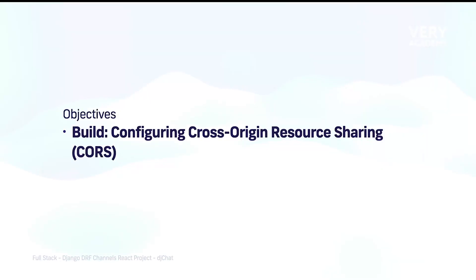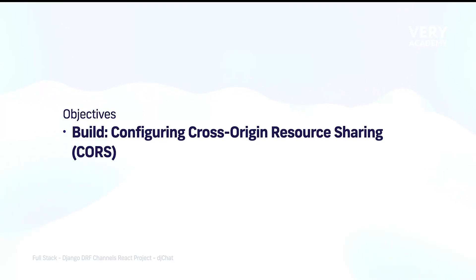Generally, when you're building an API and you're serving your front end on a different server to that of the back end API, you generally need to configure cross-origin resource sharing. CORS or cross-origin resource sharing is something that we don't necessarily need to know too much about when we're developing the application, but when we start to actually deploy the application, that's really where it comes into its own and we need a deeper understanding.